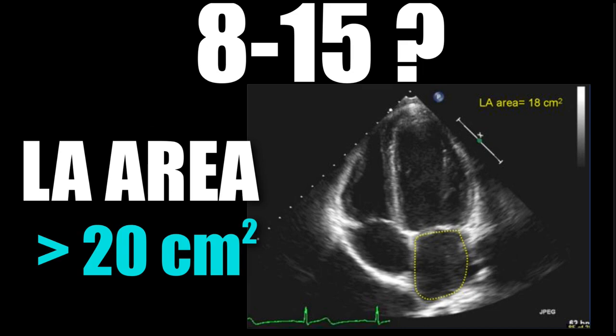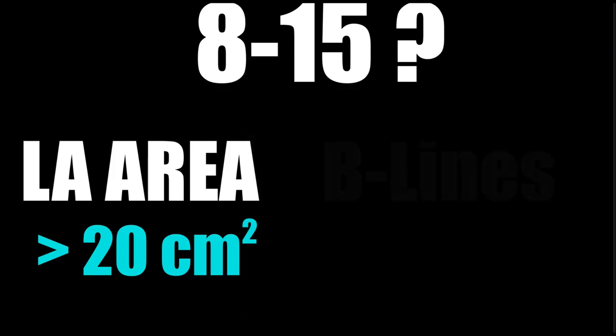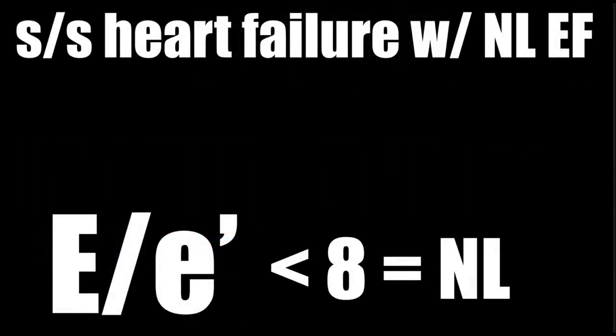The problem is what do you do when the result is between 8 and 15? That's when things get complicated. The easiest answer is to say we don't really know whether the patient has increased filling pressures. But there are a few tiebreakers. For example, if your E over E prime is 12 but the patient has an elevated or increased left atrial area, that would suggest diastolic dysfunction, and that 12 may indicate increased filling pressures. Or if you look at the lungs and notice B lines, that would also serve as a tiebreaker suggesting acute diastolic dysfunction and heart failure.